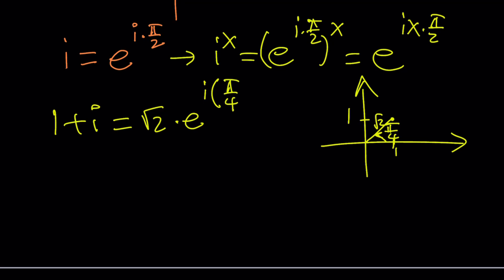But this time we want to consider all possible values because 1 plus i obviously can be written in so many different ways. Let's go ahead and write it as pi over 4 plus 2n pi. So by adding multiples of 2 pi, we're considering all the branches. Let's go ahead and put it together.